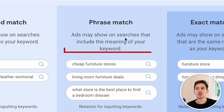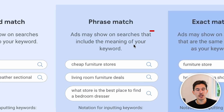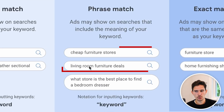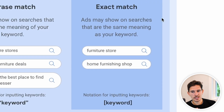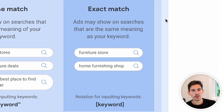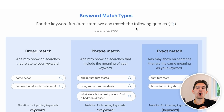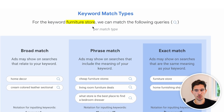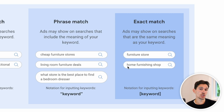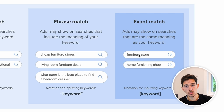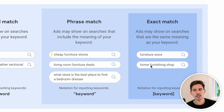Just using the example Google gives here — ads may show on searches that include the meaning of your keyword, such as 'cheap furniture stores,' 'living room furniture deals,' or 'what store is the best place to find a bedroom dresser?' For exact match, it is the exact or very close variant of the term you have. Using the keyword 'furniture store,' exact match is allowed to expand slightly to 'home furnishing shop,' which is extremely similar, but it can't go as far as 'cheap' or 'living room.' If the meaning is nearly exact, then it will be an exact match.